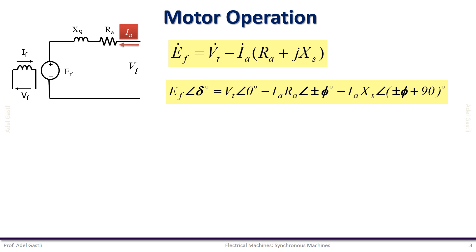Considering the terminal voltage vector phase angle as the reference zero angle, we can express this equation in phasor form as shown here, where delta is the phase angle between the induced back EMF EF and the terminal voltage VT, and phi is the power factor angle.